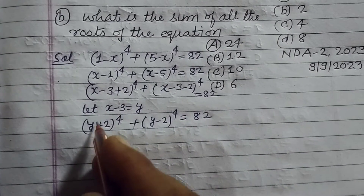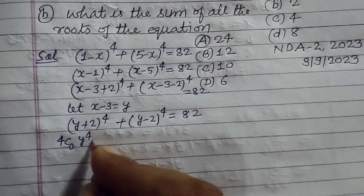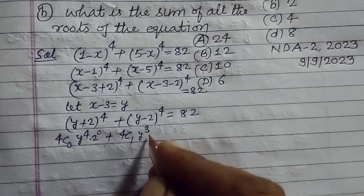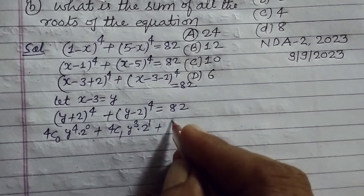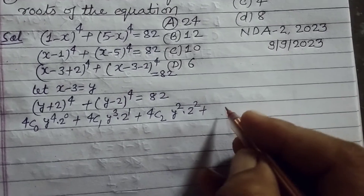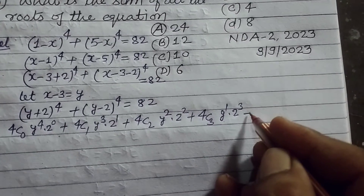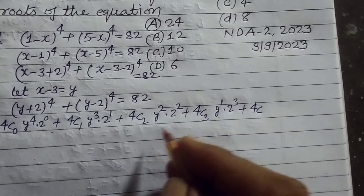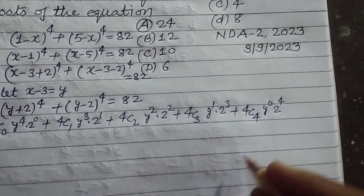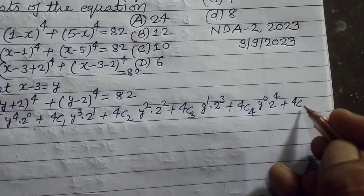Substituting: (y plus 2) to the power 4 plus (y minus 2) to the power 4 equal to 82. We expand this using the binomial theorem: 4C0·y⁴·2⁰ plus 4C1·y³·2¹ plus 4C2·y²·2² plus 4C3·y¹·2³ plus 4C4·y⁰·2⁴, and similarly for the second bracket.